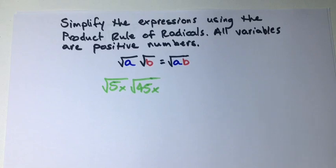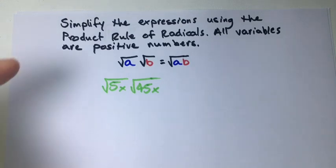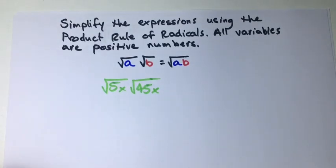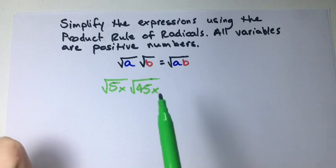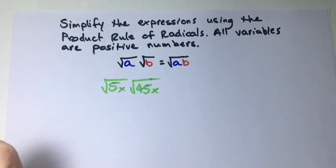In this example we want to simplify expressions using the product rule of radicals, and we assume all variables are positive numbers. The product rule says that the square root of a times the square root of b equals the square root of a times b.